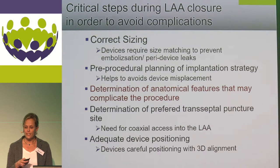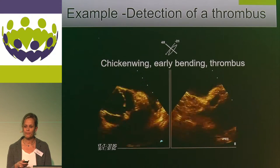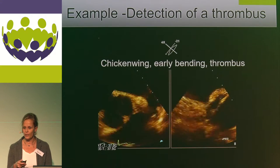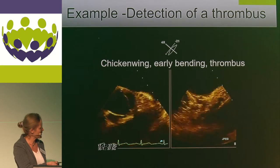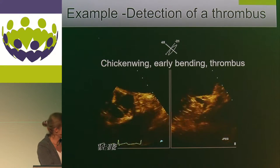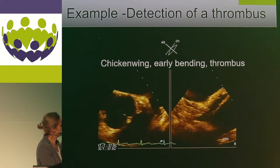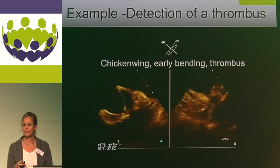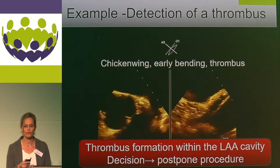For determination of anatomical features that may complicate the procedure, here is a patient with a chicken wing with a really early bending. In the distal part of the chicken wing, you can see a mobile thrombus, and so the decision was made in this case to postpone the procedure.